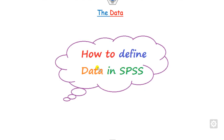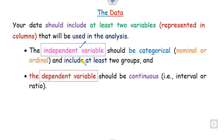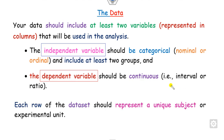How do you define your information in SPSS? There are two variables: independent and dependent. The independent variable must use categorical information — nominal or ordinal. The dependent variable must be continuous, so you use scale measurement. Once you set this up, you define each piece of information accordingly.